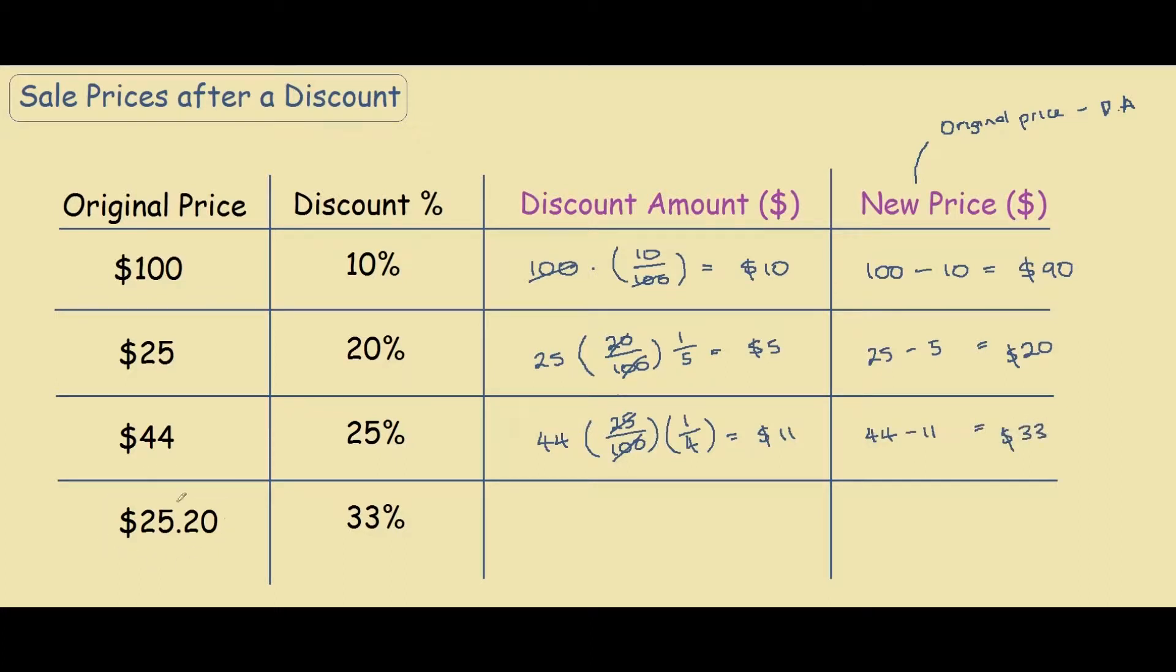In our fourth example, the problem gets a bit more complicated because we're no longer working of whole numbers. So the method still stays the same. We follow the same methods as previous examples, we have 25.20 times 33 over 100. From here, you can either use your calculator because the numbers get a bit difficult. However...